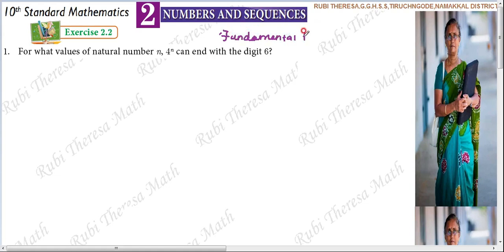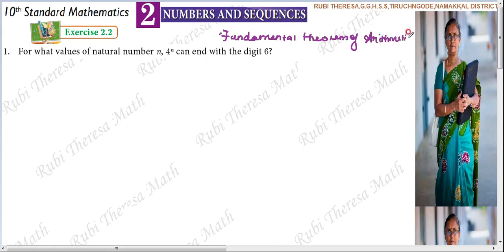Fundamental Theorem of Arithmetic states that each and every composite number can be expressed as a product of powers of primes. Let's look at the prime factorization of a number.